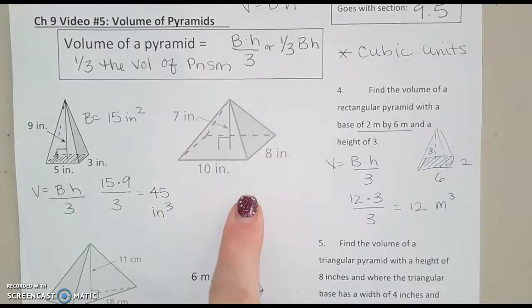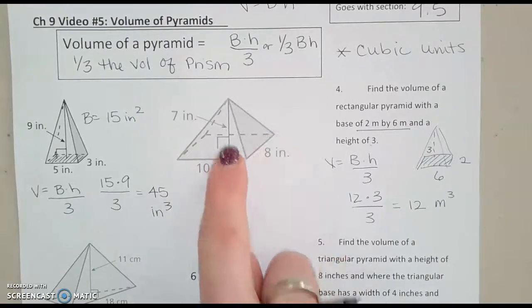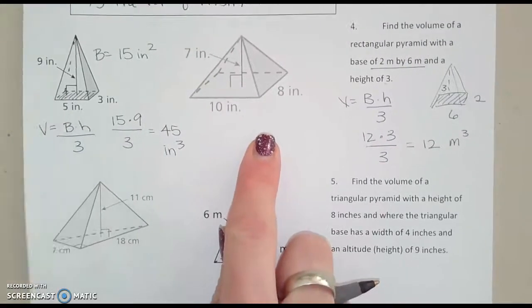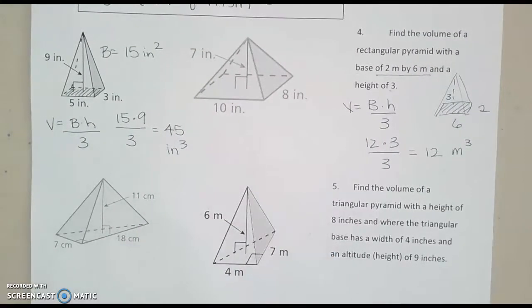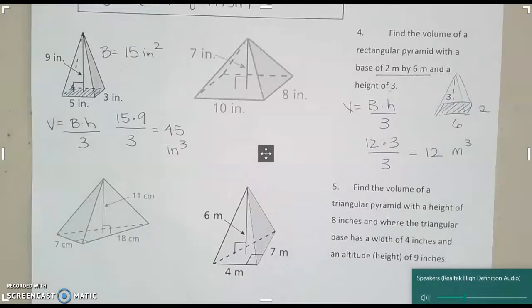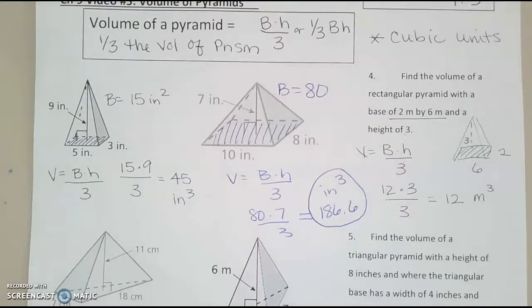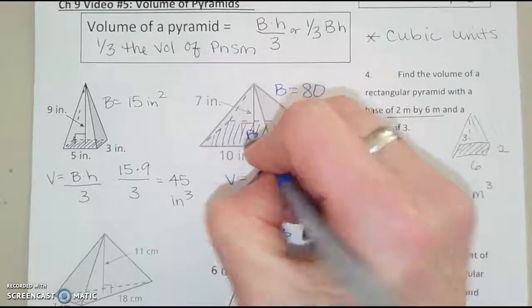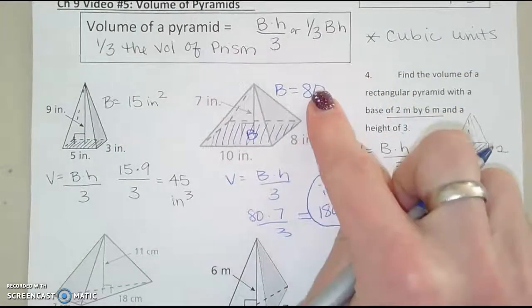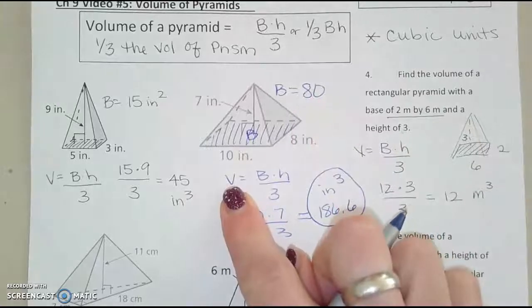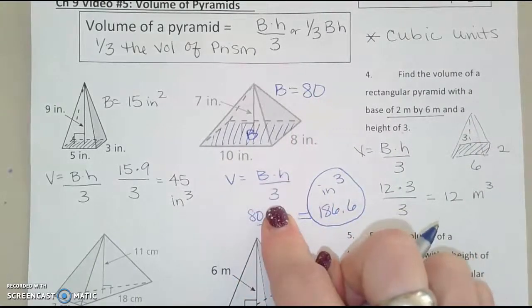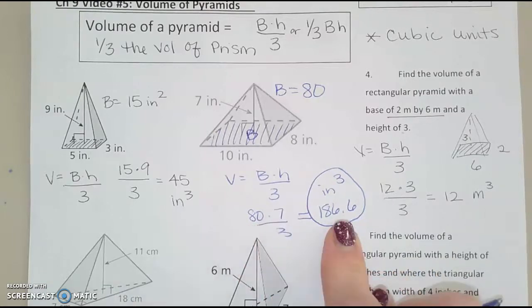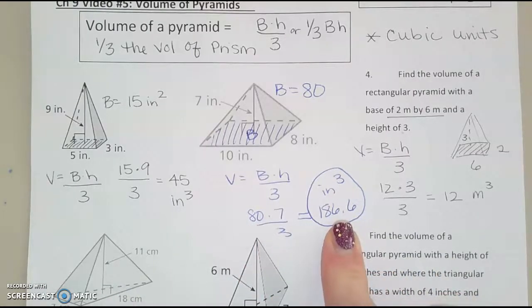So, you can do this one. Again, a rectangular base, and they give you the height. Pause and do this one as practice. Okay, I found the area of this rectangular base. Capital B was just 8 times 10 is 80. Here's my formula for the volume of the pyramid. Capital B times H divided by 3. So I multiplied the base, capital B, times the height, and divided by 3, and got this.